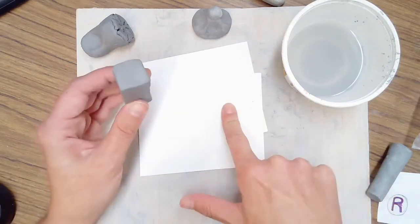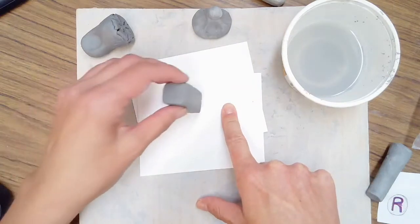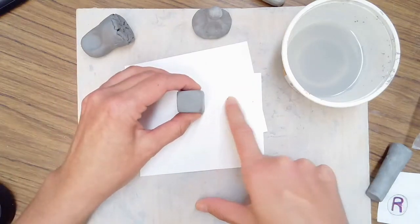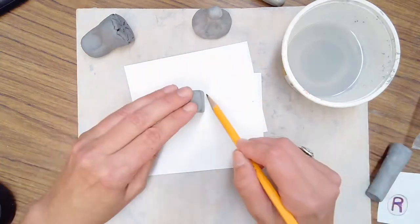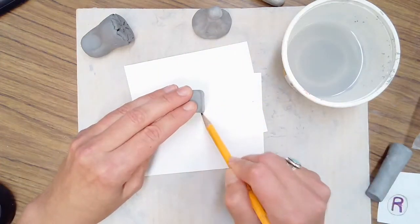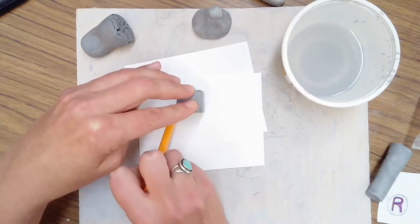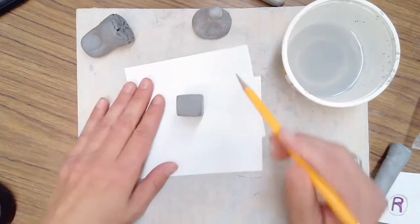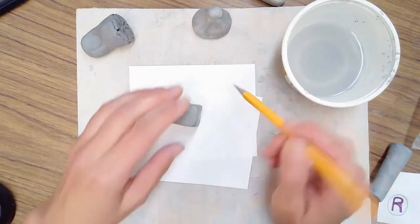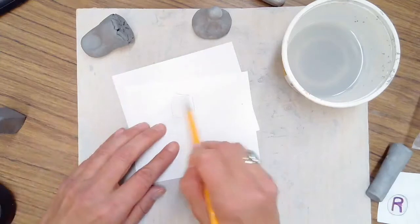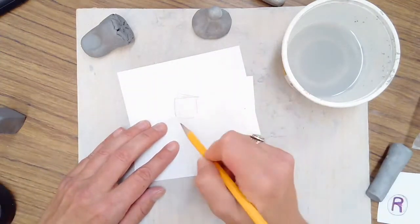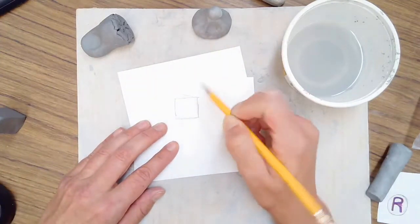So I have a piece of scrap paper. This is just some computer paper that I cut up. I'm going to place the stamp on there and trace around it just to make sure that I'm drawing my letter so that it will fit. I don't want to make it to be too big or too small.